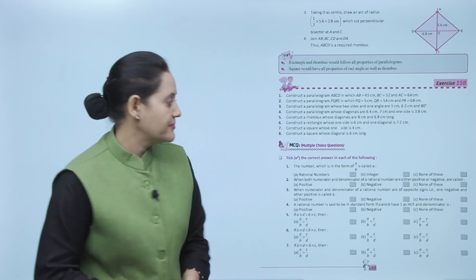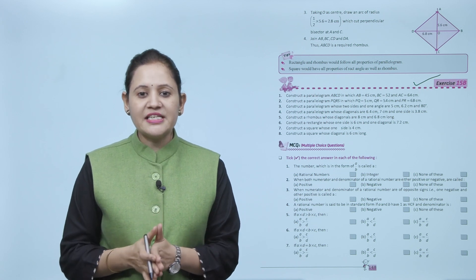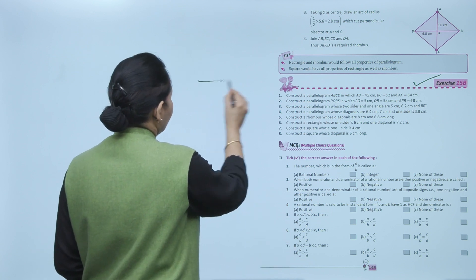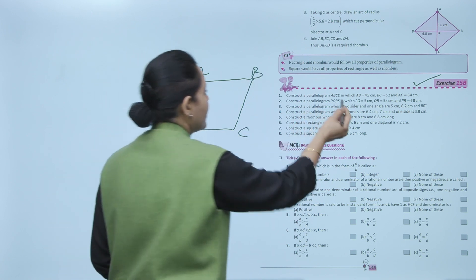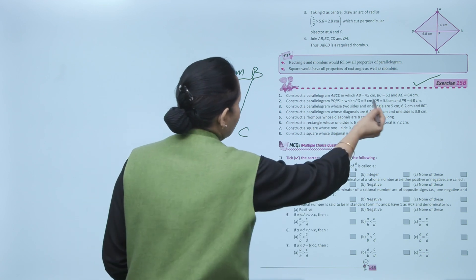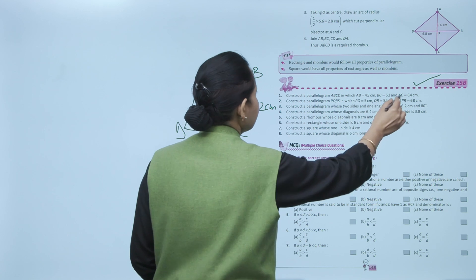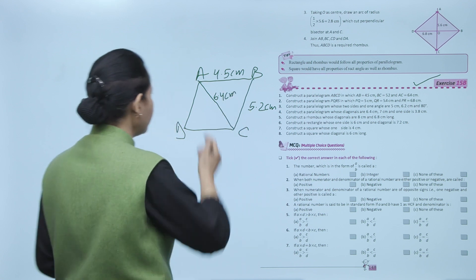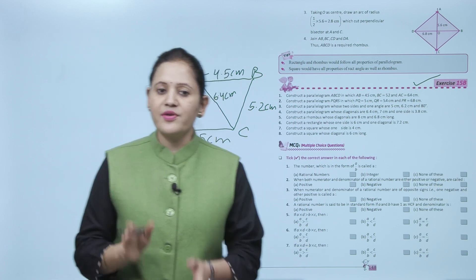Next is Exercise 15B. Construct a parallelogram ABCD in which AB = 4.5 cm, BC = 5.2 cm, and AC = 6.4 cm. First, we draw a rough sketch. As we know, opposite sides are equal in a parallelogram, so CD = 4.5 cm and DA = 5.2 cm. According to the given measurements, we will draw the parallelogram.